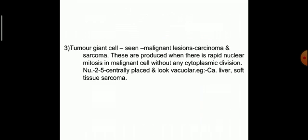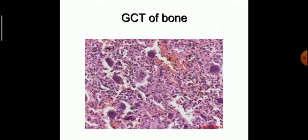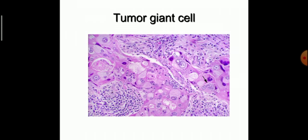Another type is the tumor giant cell, seen in malignant lesions like carcinoma and sarcoma. These are produced when there is rapid nuclear mitosis in a malignant cell without cytoplasmic division. The nuclei can be 2 to 5, centrally placed, and look vesicular. These tumor giant cells are found in carcinoma of the liver and soft tissue sarcoma. In the giant cell tumor of bone you can also find multiple giant cells with multiple nuclei. The nuclei are not the same size or shape — there can be hyperchromasia and irregular nuclear membranes.